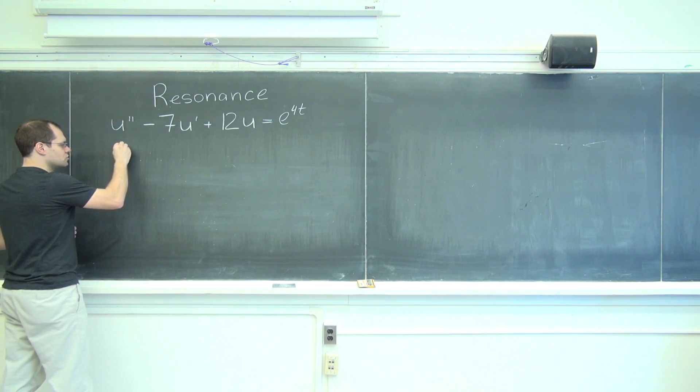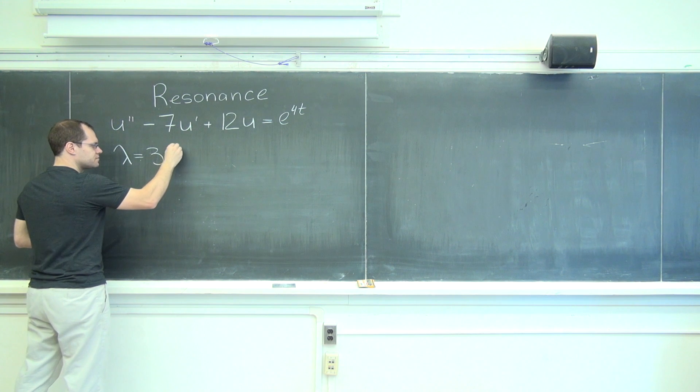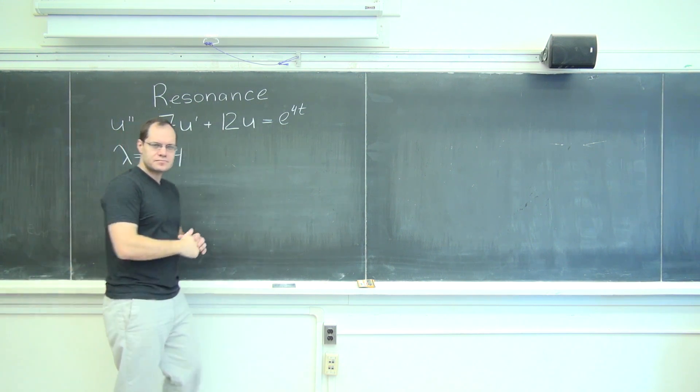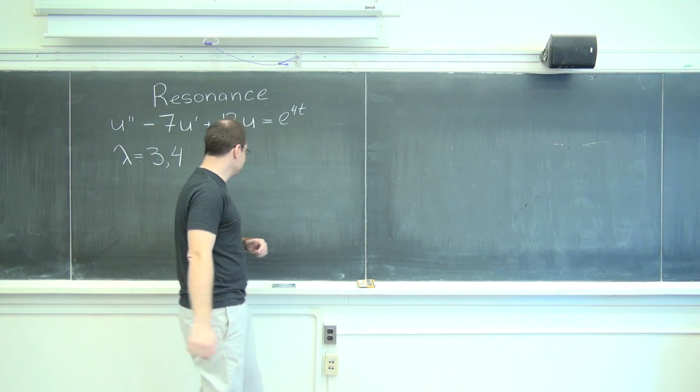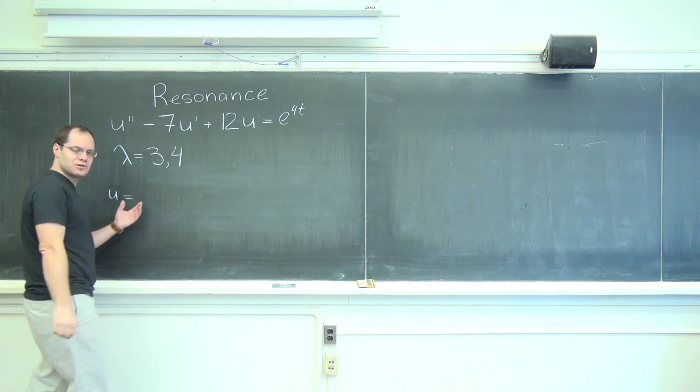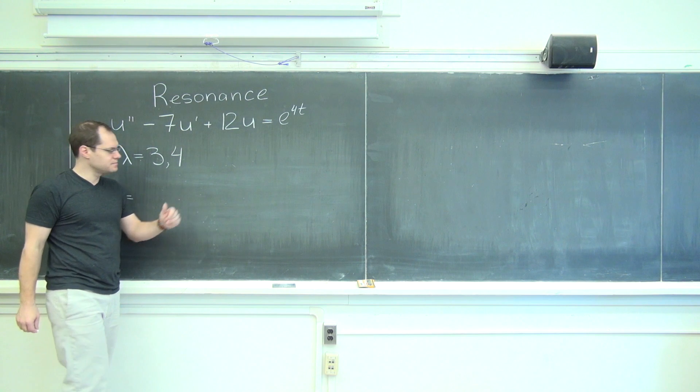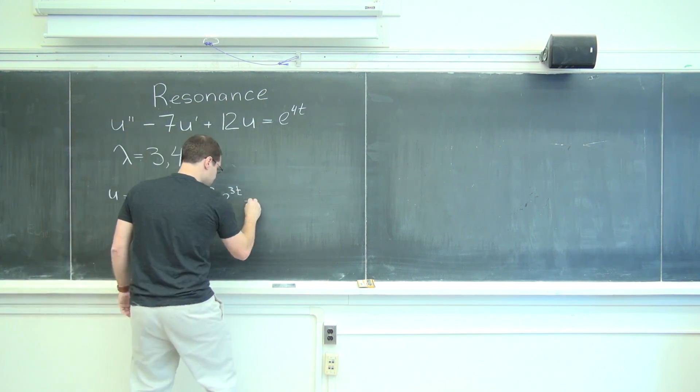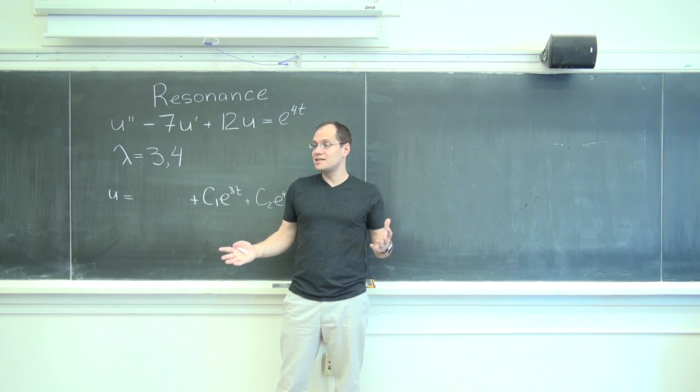So the two roots are three and four as we discussed. So we can actually write down the null space. Why don't we do that? So the general solution equals, saving space for a particular solution. So that's the null space.